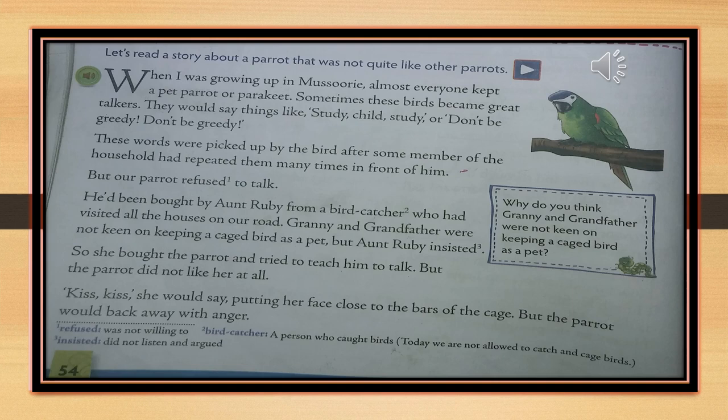But our parrot refused to talk. 'Refuse' means not willing. The writer is saying that he was growing up in Missouri and it was a fashion at that time to keep a pet parrot or parakeet. Parakeet is also a type of parrot. People used to keep them because these birds can be great talkers — they can speak specific words by learning from the family members. They imitate humans and human voice.